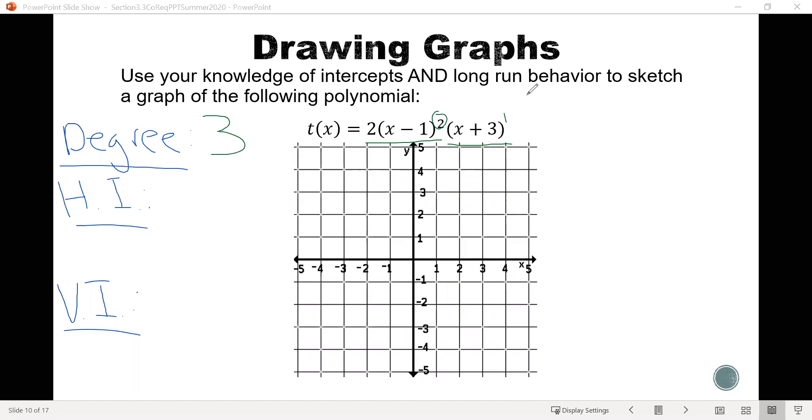Our horizontal intercepts, well, we could get those from setting this function equal to 0. So we have 0 equals 2 times x minus 1 squared times x plus 3. We know we could find the 0s here from setting each of these pieces equal to 0. Which if we do that, I believe we get x equals 1 and x equals negative 3. So we know our horizontal intercepts occur at the points 1, 0, and negative 3, 0.